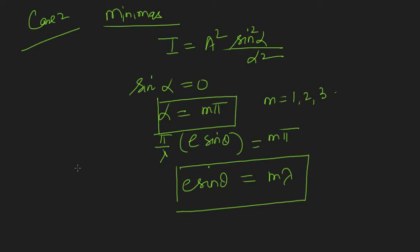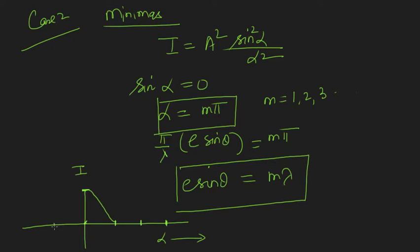So now I understand that if I plot I versus α, when α = 0 I get maxima with intensity a², and for α = π, 2π, 3π I get minima. But I don't know what happens between π and 2π. Obviously between two minima I should have a maxima, but whether this maxima is of equal height as the primary maxima, I don't know. So I need to find more points for the maxima.